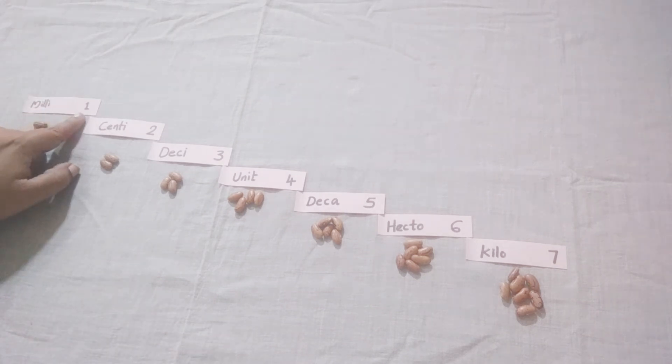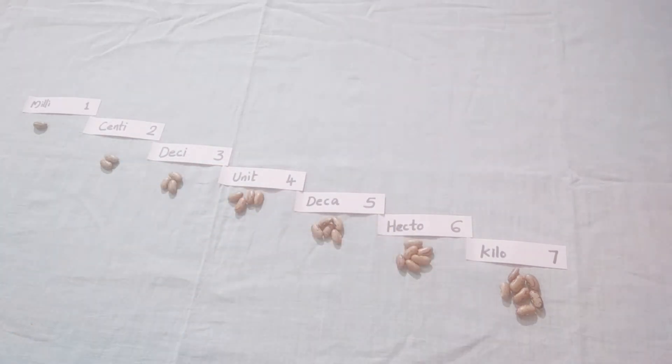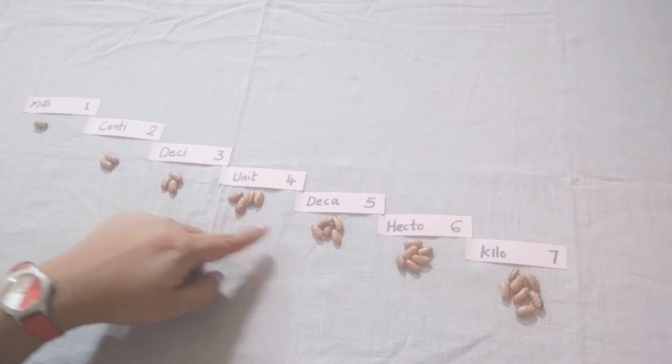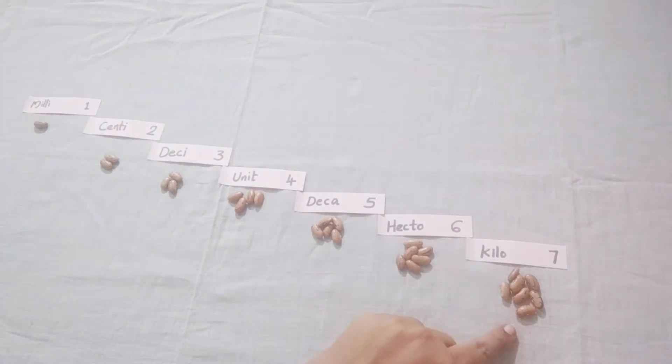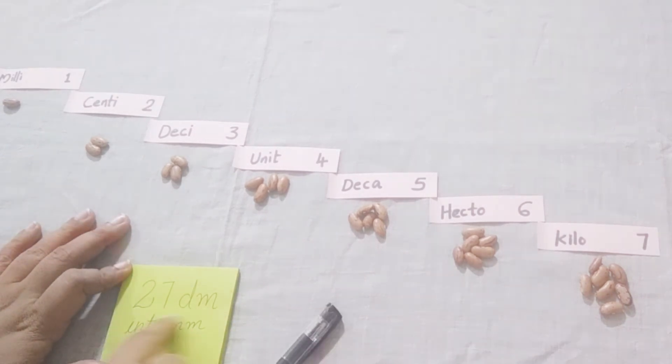Milli is in the first place. One, two, three, four, five, six, seven. Keeping milli at the first place and kilo at the seventh place because kilo is the largest and milli is the smallest. According to these numbers, I have kept some kidney beans here. One, two, three, four, five, six, seven like that. We are going to convert 27 decimeters to millimeters. So how do we convert?